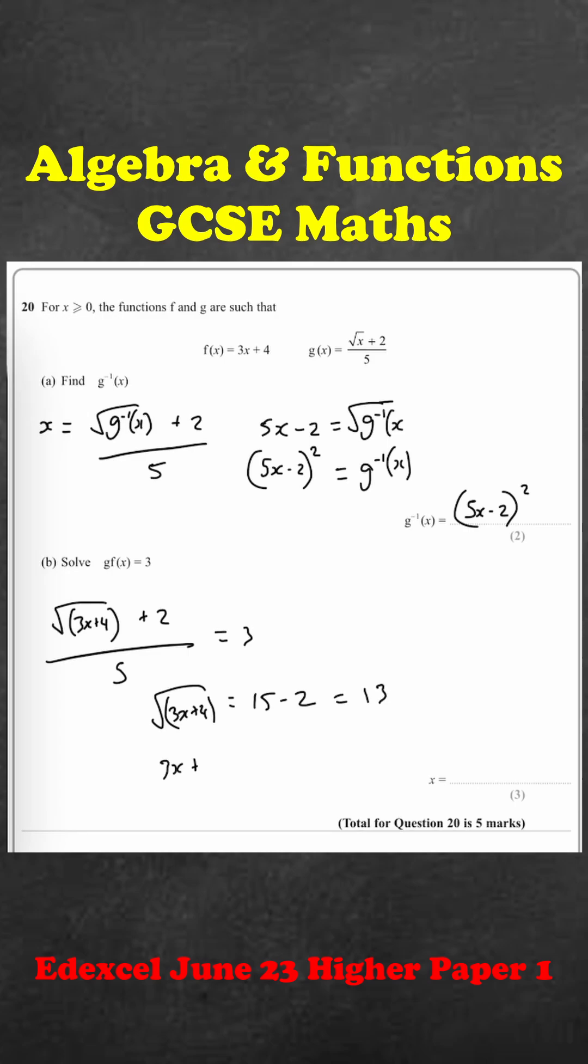Square both sides so we get 3x plus 4 equals 169. Therefore, 3x equals 165, which means x equals 55.